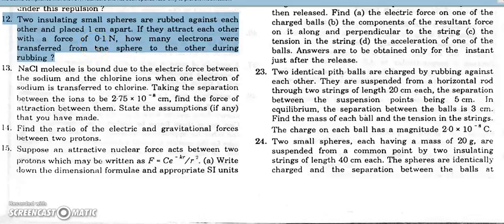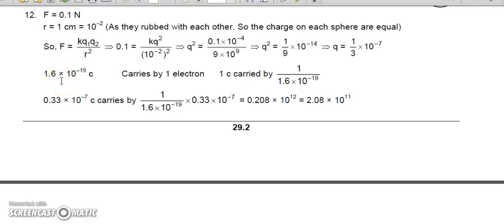Question number 12: two insulating spheres are rubbed against each other and placed at a separation of 1 centimeter. They experience a force of 1 Newton due to charging, and we have to find how many electrons are transferred from one to another. Both charges are ne and minus ne, where n is the number of electrons transferred. The force is 1 Newton and the separation is 0.01 meter. Find the value of q, then set it equal to ne to get the value of n — the number of electrons transferred.